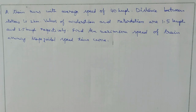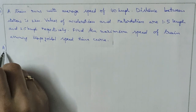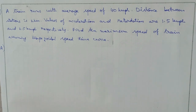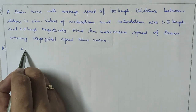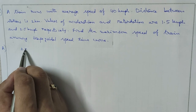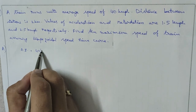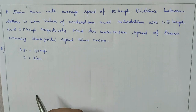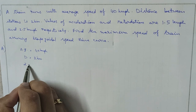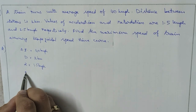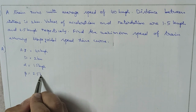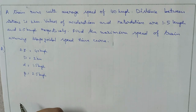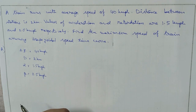This is the second problem on speed-time curve. A train runs with an average speed of 40 kmph and the distance between stations is 2 km. The acceleration α = 1.5 kmph/s and retardation β = 2.5 kmph/s.